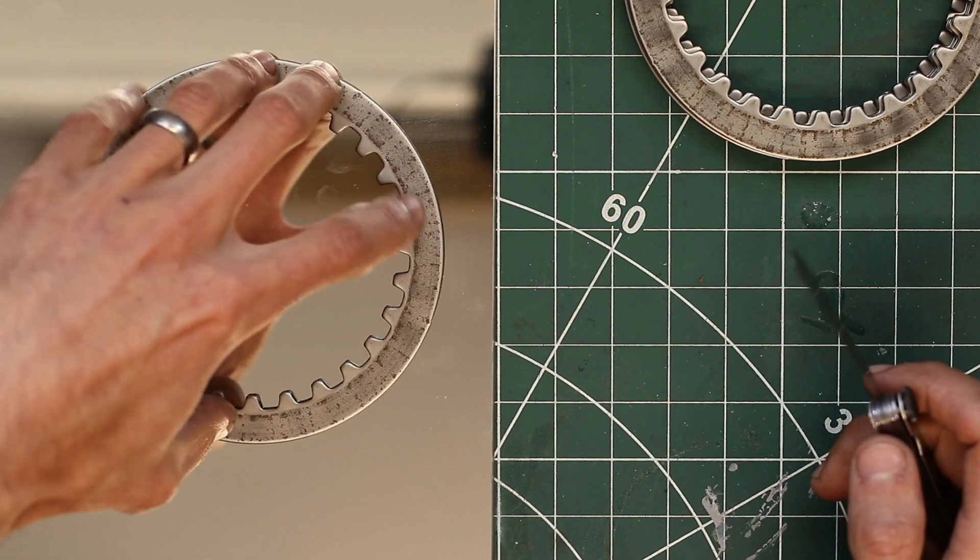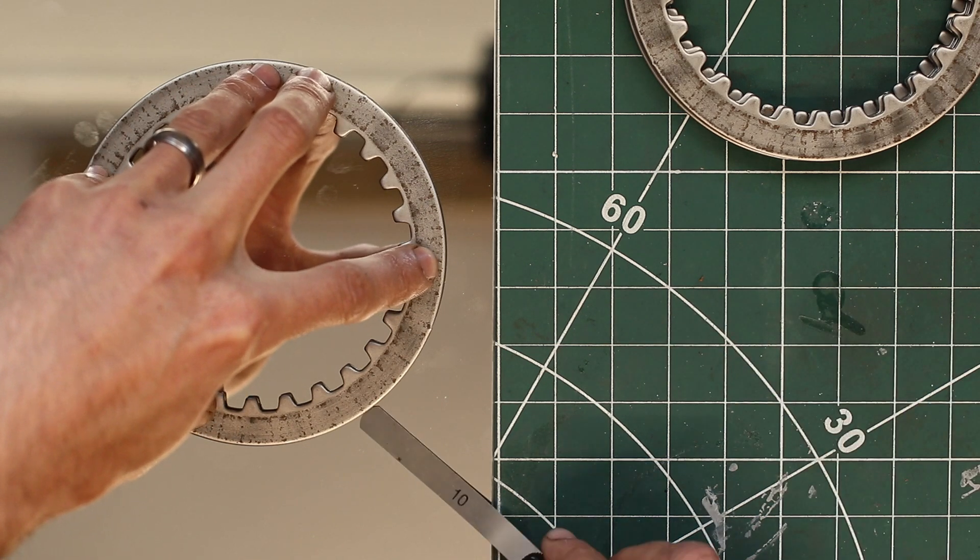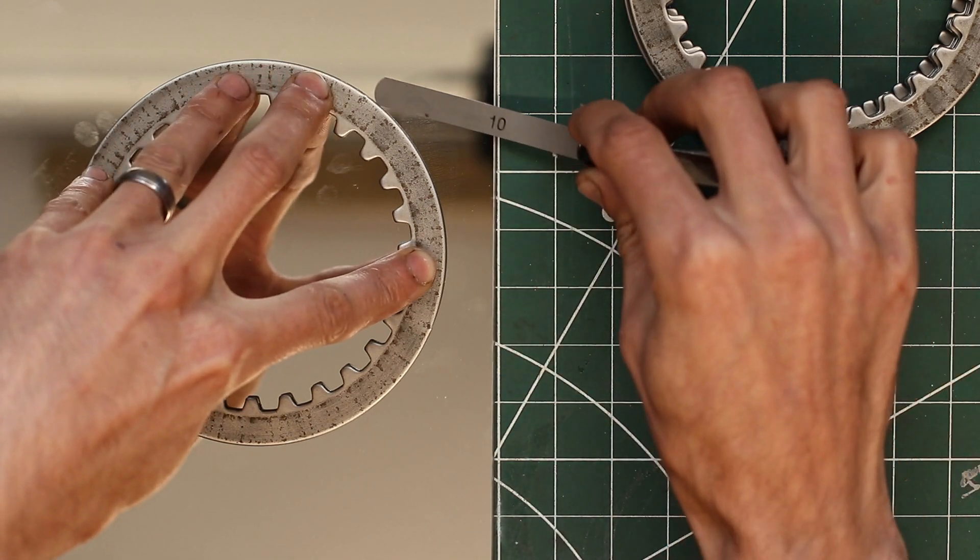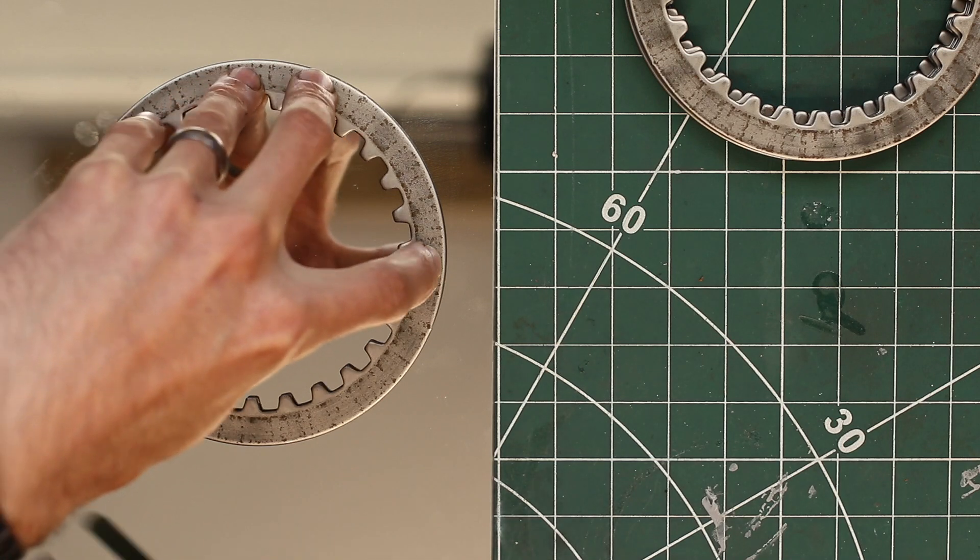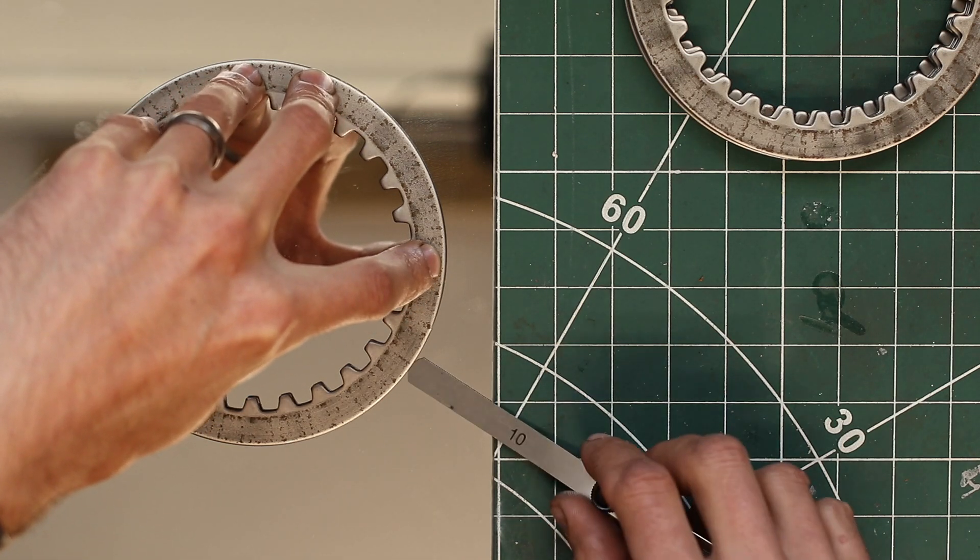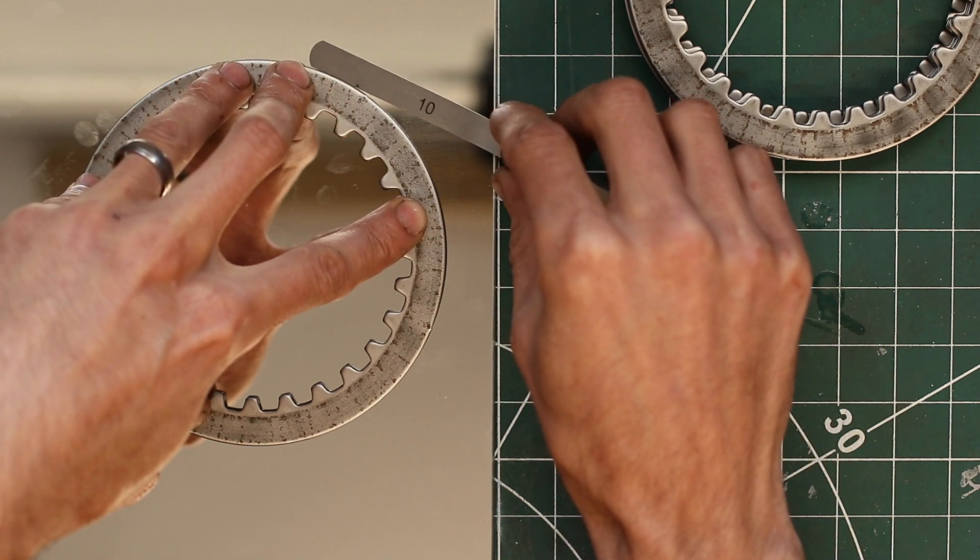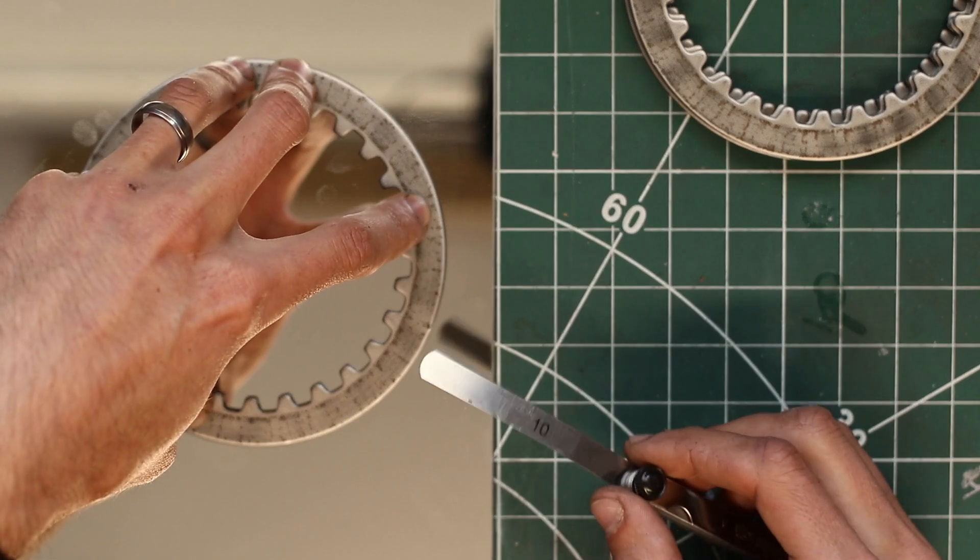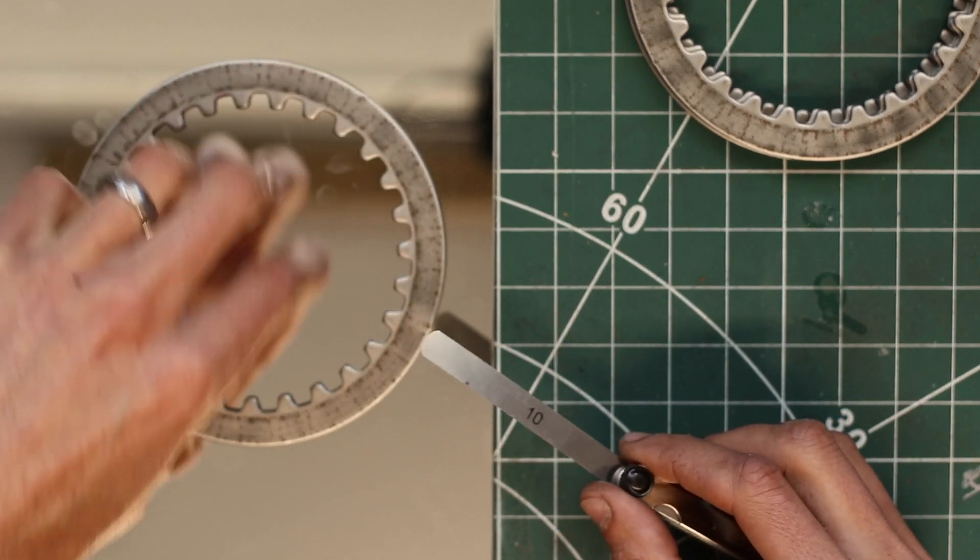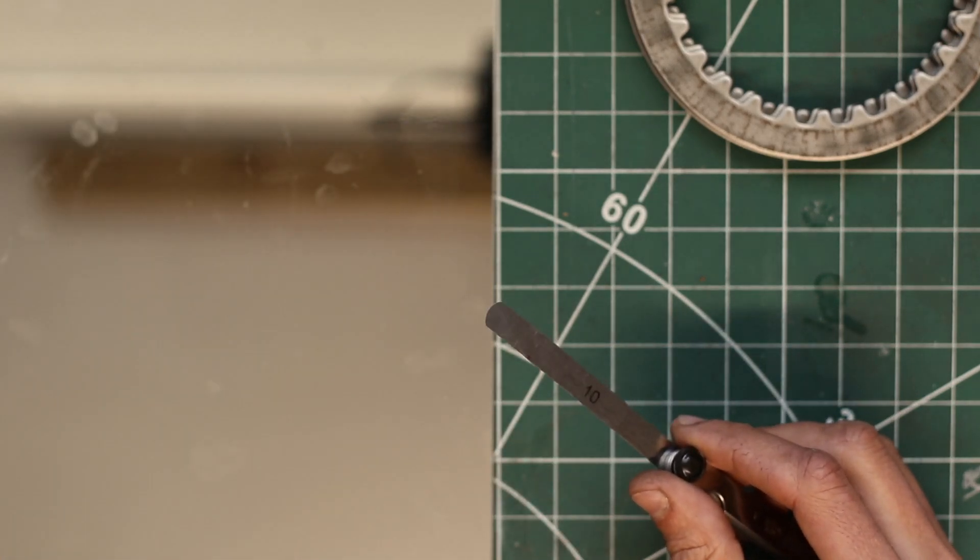What we need to do is lay the clutch plate flat on the mirror, apply some light pressure, and just check if we can slide the feeler gauge underneath it all the way around. And I can't, which means there's no significant warpage in the clutch plates. Now I'm gonna go ahead and check the other ones as well.